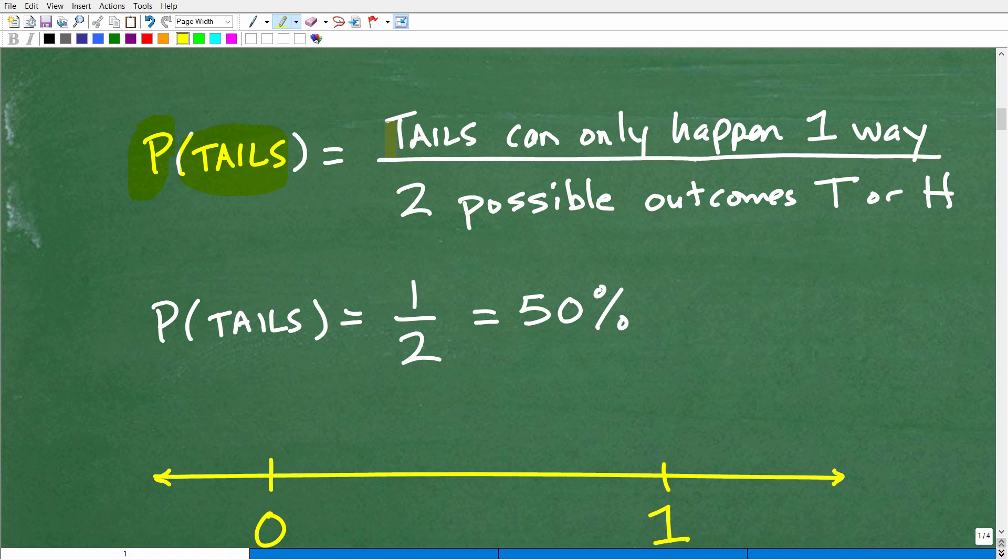So, the probability of getting tails, well, we could define that formally as saying, okay, tails can only happen one way. If I flip that coin, the only way tails can come up is one way. It's got to land where we can see the tails. However, what's the total possible number of all outcomes? Well, there's two possible outcomes. You can either get a tails or heads, right? Heads or tails. So, for the probability of getting tails, there's one way that can happen. So, that's our numerator. And the total possible outcomes is two.